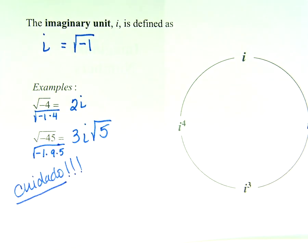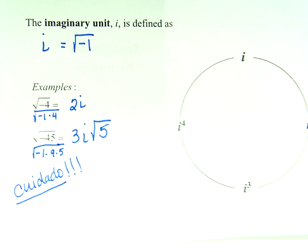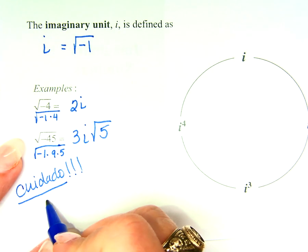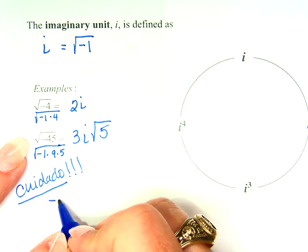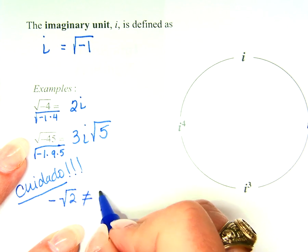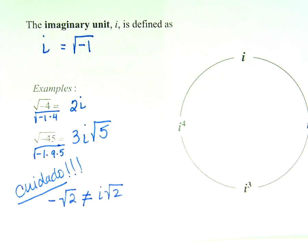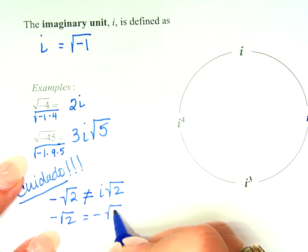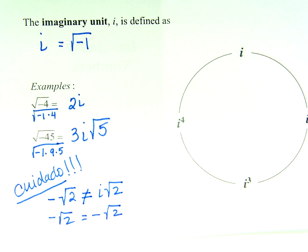Do you recognize that word? 'Cuidado' — it is in Spanish. What does it mean? Be careful, caution. What I need you to be careful about is that the negative square root of 2 does not equal i times the square root of 2. Negative square root of 2 equals negative square root of 2. The only time we get i is when the negative is inside the radical.